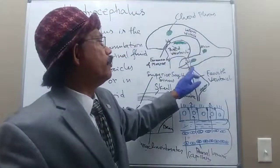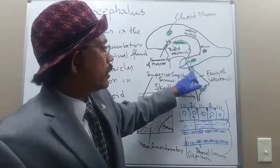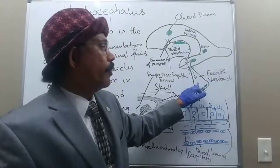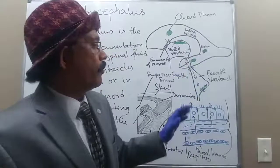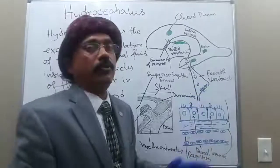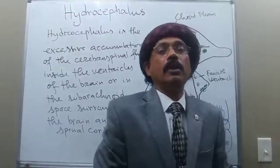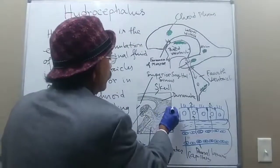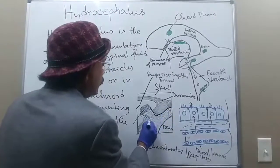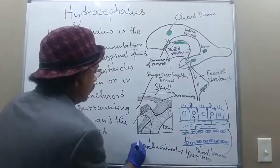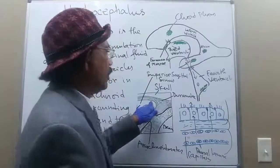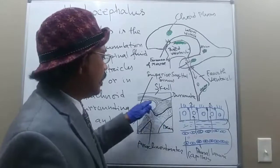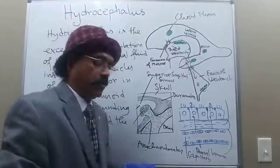There is communication from the lateral ventricle to the third ventricle by two foramina of Monroe or intraventricular foramina. There is communication from the third ventricle to the fourth ventricle through the cerebral aqueduct or aqueduct of Sylvius. From the fourth ventricle to the subarachnoid space, we have the foramen of Magendie and two foramina of Luschka. Through these foramina, CSF goes to the subarachnoid space, then passes through the arachnoid villi into the superior sagittal sinus and enters the venous blood.